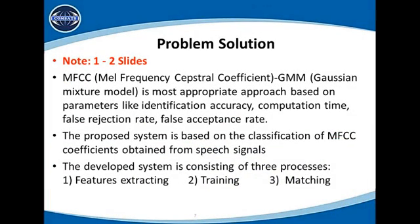The problem solution involves MFCC, which is Mel Frequency Cepstral Coefficient, and GMM, which is Gaussian Mixture Model. These are the most appropriate approaches based on parameters like identification accuracy, computation time, false rejection rate, and false acceptance rate. In this project I am going to use feature extraction, training, and matching, which will be described later on.